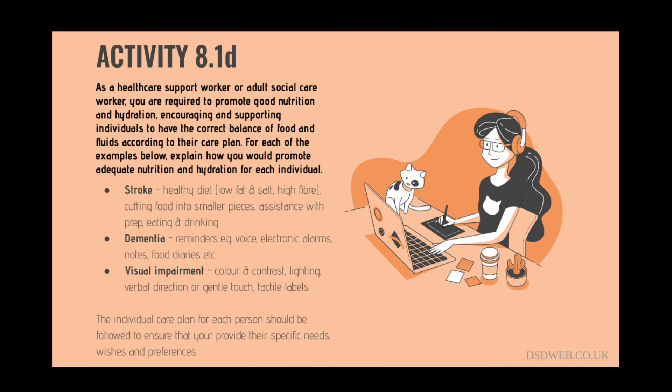The final activity describes three individuals and asks how you would promote adequate nutrition and hydration to them. The first individual has weakened muscles from a recent stroke. Recovery will require several professionals from nurses to speech and language therapists, so advice should be recorded in the care plan and followed. They may need assistance with food preparation, feeding, or even tube feeding. A low fat, high fibre diet with limited salt intake may be necessary to reduce the likelihood of another stroke.